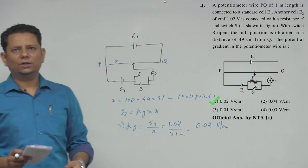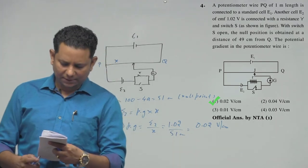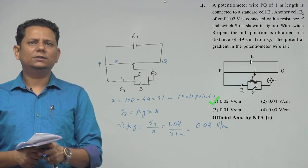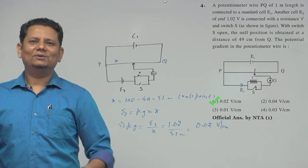So this is our potential gradient. Based on this, we can say that option number one, 0.02 volt per centimeter, would be the right answer.